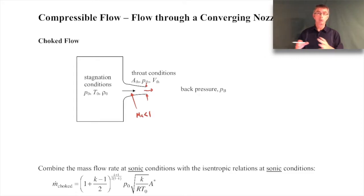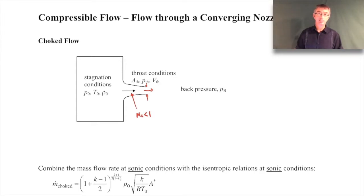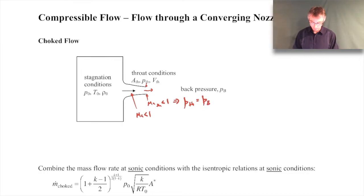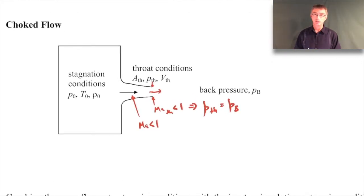We'll talk more about that when we cover converging-diverging nozzles. But at this point, since the flow at the exit is still subsonic, the pressure at the throat will be the same as the surrounding back pressure. If the Mach number at the throat is less than one, the exit pressure — or throat pressure in this case — equals the back pressure, because it'll have the same pressure as the surrounding environment.